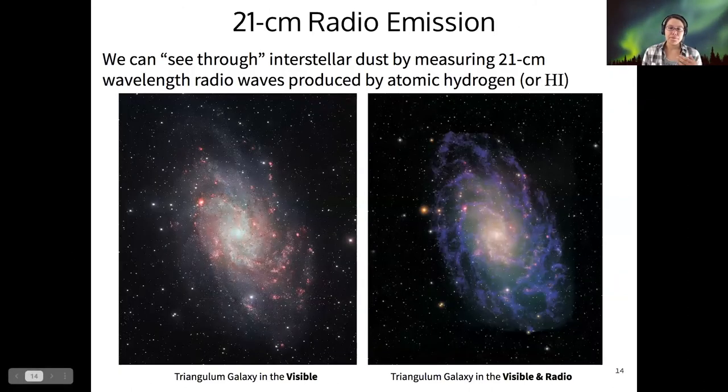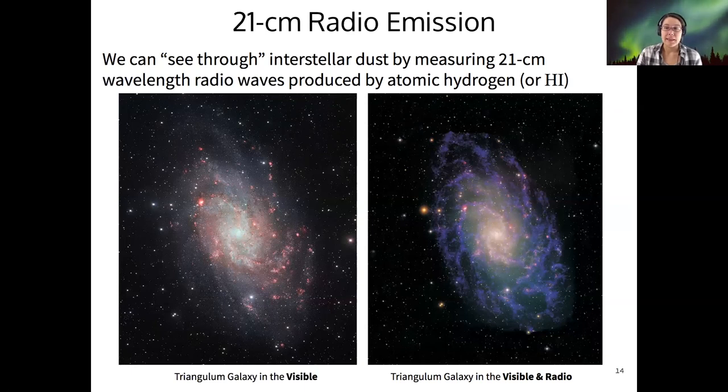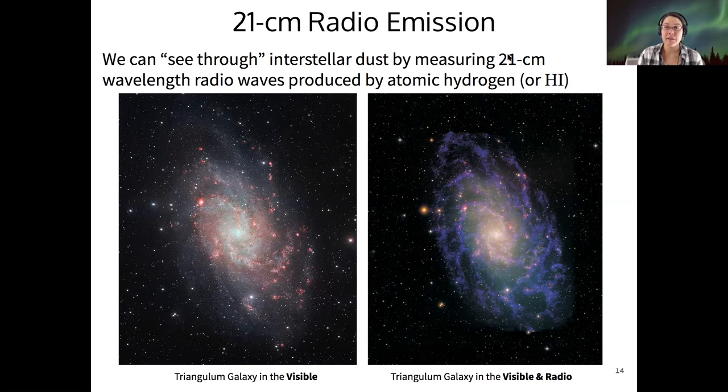There's a very important range of radio that is really key for peeking through interstellar dust. And this is the 21-centimeter wavelength radio waves. They're called, not very creatively, 21-centimeter radiation. And this is also produced by hydrogen.